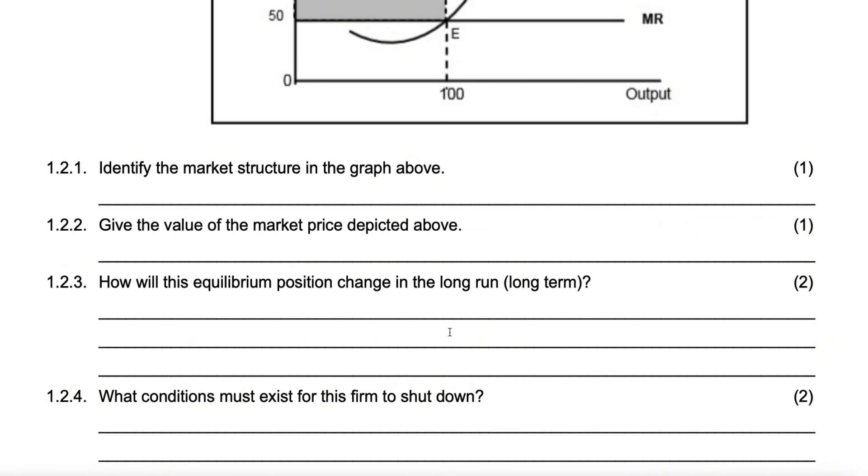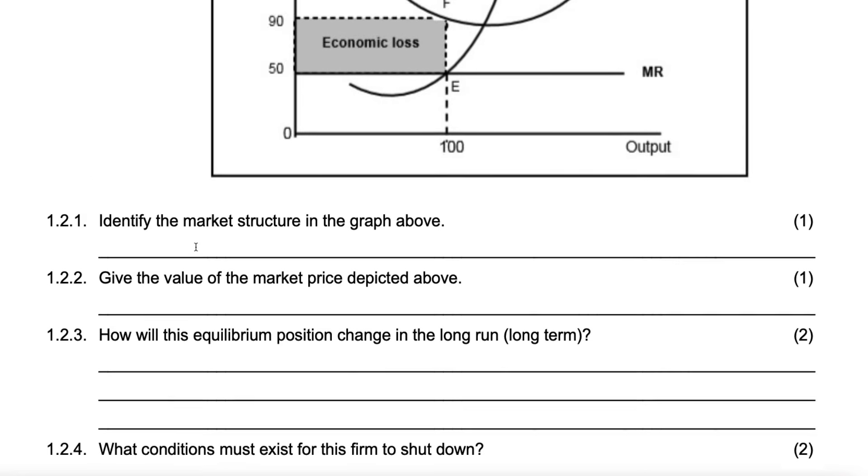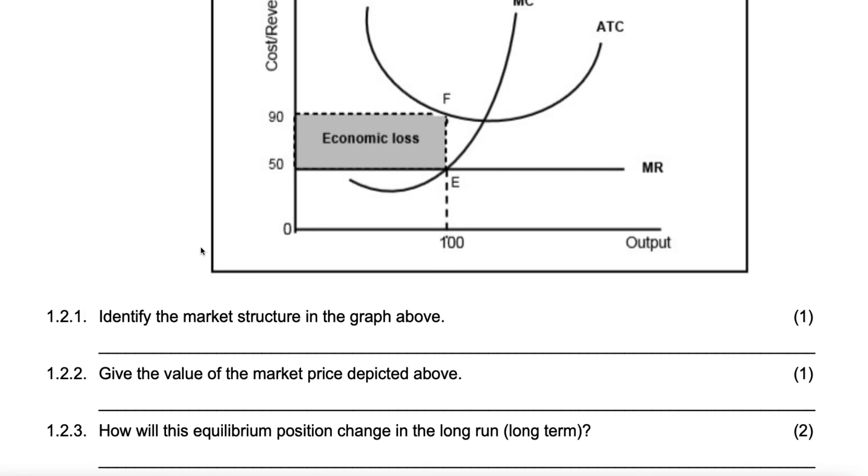Let's go to Darlington. I'll give this one to Lidwa. Then Darlington, I want you to take 1.2.3. Lidwa, read number 2. Give the value of the market price depicted above. The market price is, I think it's 50 Rand. Yes. The market price is 50 Rand. They did not ask motivation. But how do you know the price? Why do you say it's 50 and not 90? Because the price is equal to MR. Yes. And MR is given. MR is given. So, the price cannot be 90 because the price cannot be above MR. Because the price is equal to D and equal to AR and equal to MR.